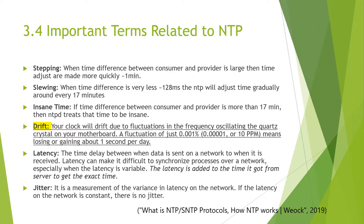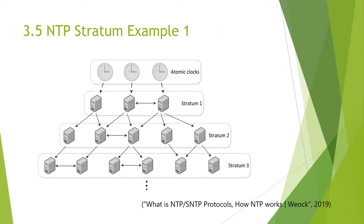Here are some important terms related to NTP. You may find the term drift useful in the following slides. TrueTime API uses GPS and atomic clocks as the underlying time references. Both GPS and atomic clocks may fail due to various reasons such as frequency error, antenna and receiver failure, or GPS system outages. NTP uses the concept of stratum to define the hierarchy of NTP servers. At the top of the hierarchy are stratum 1 servers, which get their time from atomic clocks. Stratum 2 providers get their time from stratum 1, and stratum 3 from stratum 2. This stratum can go up to 256 layers.